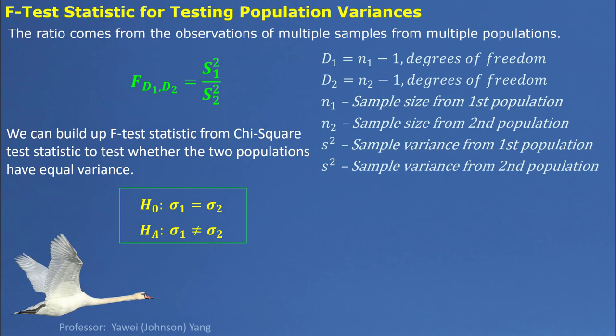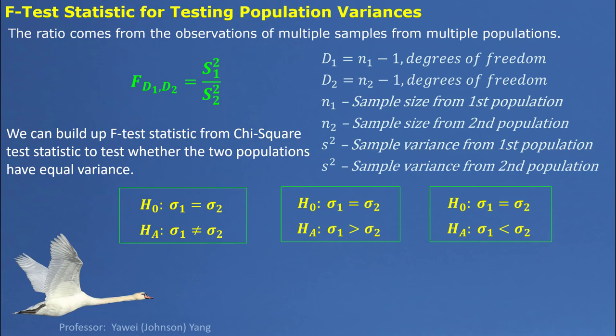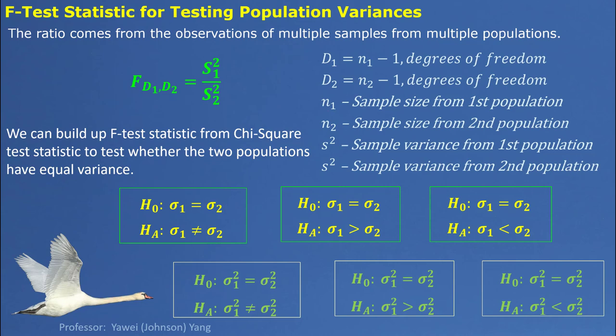If we look at the two population standard deviations, we simply test if they are equal. So the null hypothesis and alternative hypothesis are written this way. This is two-sided hypothesis testing. We can also consider one-sided or one-tailed hypothesis testing, and they can be transformed as the description by using variance.